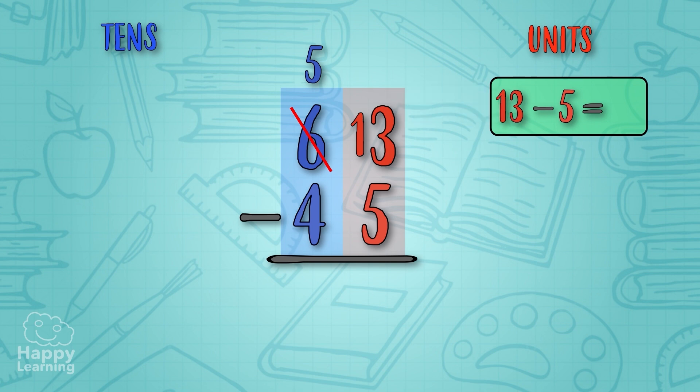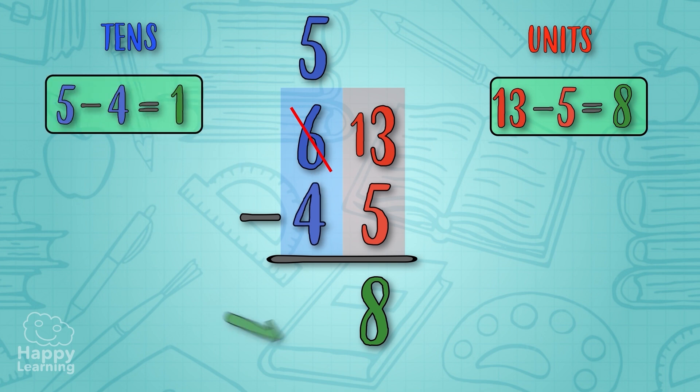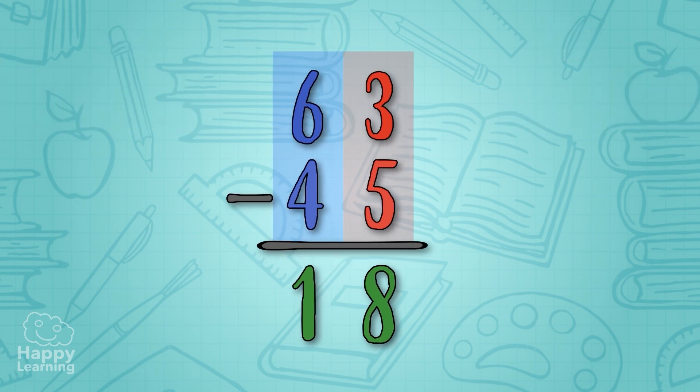Now we can subtract the units. 13 minus 5 is equal to 8. We have 8 units. Now we need to subtract the five tens we had in the minuend and the four tens that we had in the subtrahend. 5 minus 4 is equal to 1.